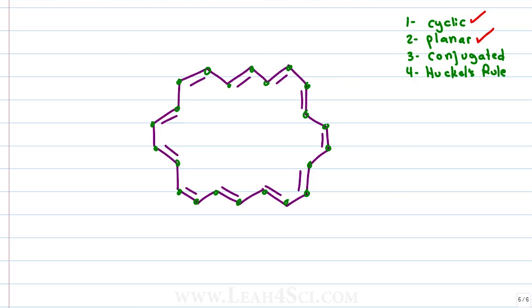Next we look for conjugation. With every single carbon having a pi bond, we can assume that they can all resonate between each other because there's not a single sp3 carbon to block that resonance to break up the conjugation.